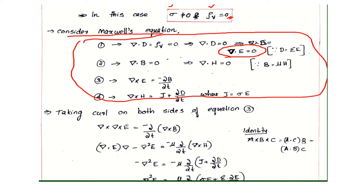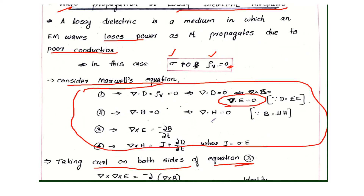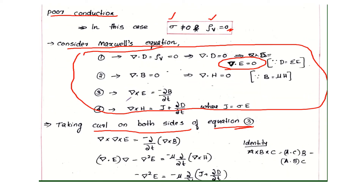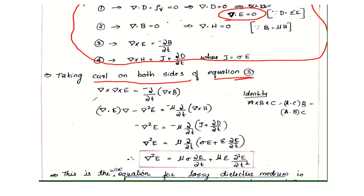We are going to consider equation 3, and we are going to take the curl on both sides of this equation. Equation 3 is del cross E equals minus partial B by partial t. Applying the vector identity A cross (B cross C) equals A·C into B minus A·B into C, we get del(del·E) minus del squared E.